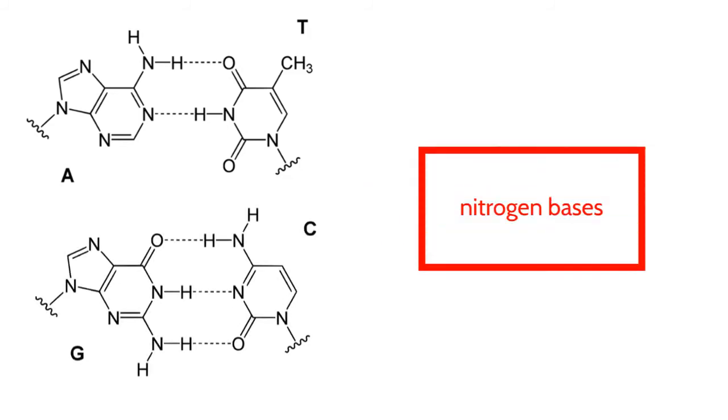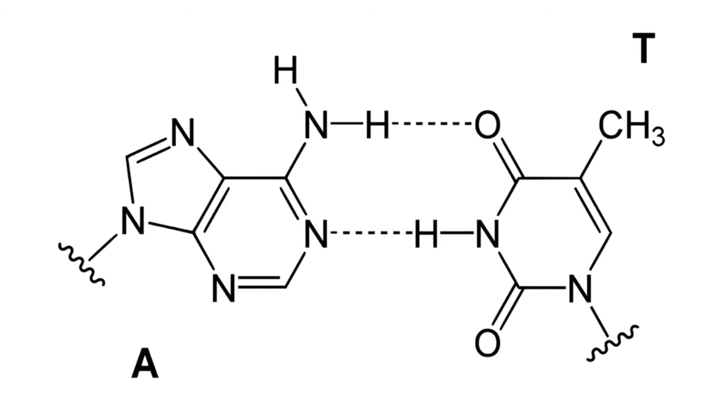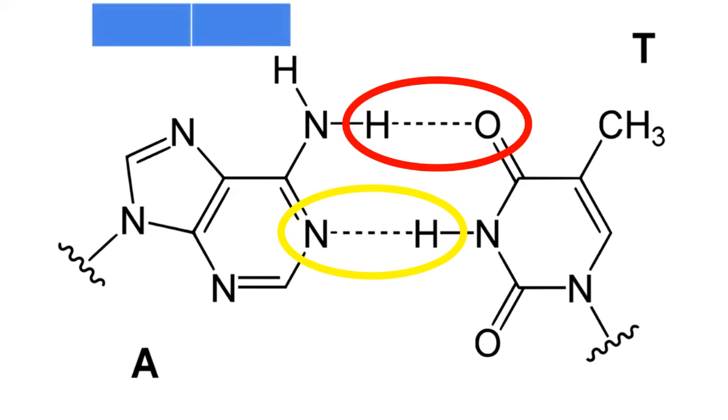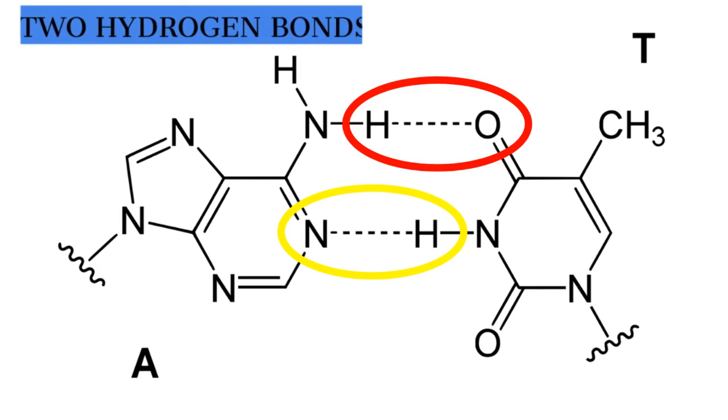The reason for the bases pairing in this specific way is that when an adenine lines up across from a thymine, partially positive hydrogen atoms line up across from partially negative oxygen and nitrogen atoms. The attraction that forms between them helps to hold the DNA molecule together and is called a hydrogen bond. Two hydrogen bonds form between A and T.